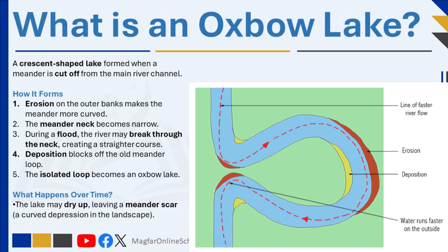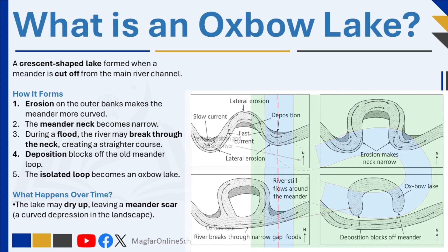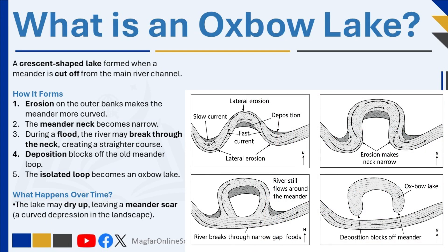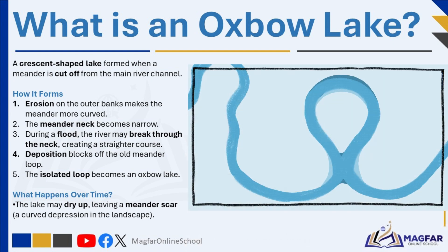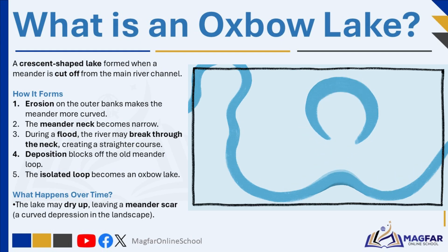Eventually, during a flood or period of high rainfall, the river may have enough energy to break through this narrow neck, creating a new, straighter route for the water to flow. The old meander loop is then cut off from the main river when sediment is deposited at both ends, blocking it off — forming a separate curved body of water called an oxbow lake. No longer connected to the river, the oxbow lake may slowly dry up over time, leaving behind a curved low-lying area called a meander scar, marking the path the river once took.